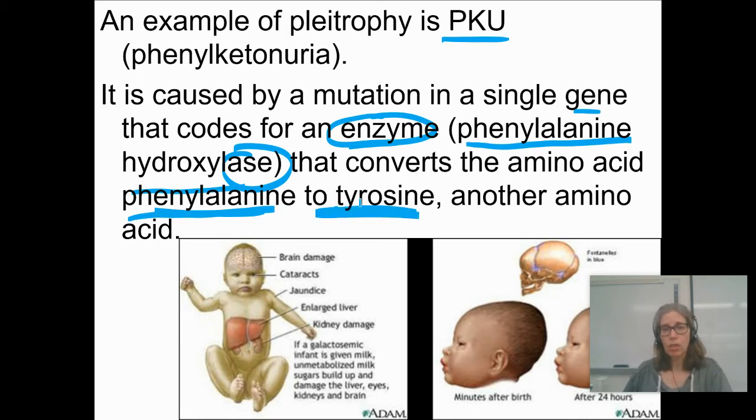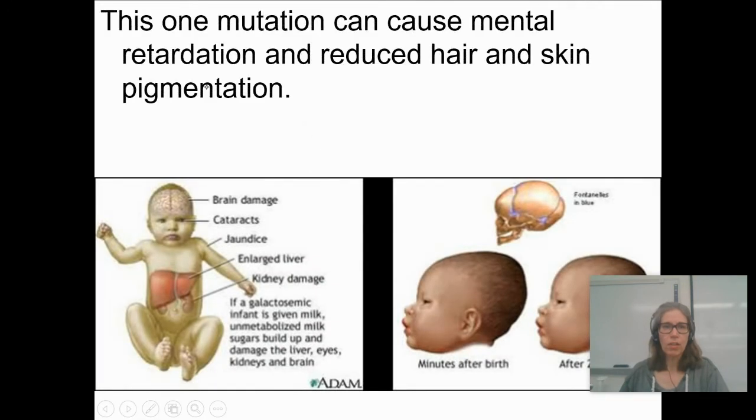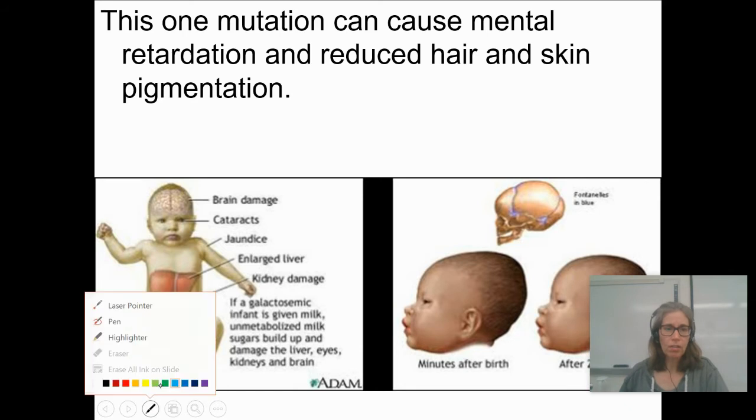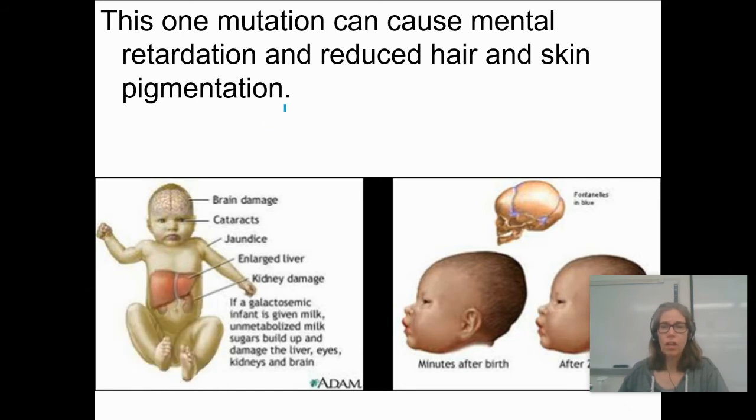That's the normal thing that it should do. If that enzyme isn't working or isn't working very well, you build up too much phenylalanine, which is a problem. Too much phenylalanine can cause mental retardation, reduced hair, and issues with skin pigmentation. You would think those are very different things, but it's this one gene, this one gene product that affects all of this different stuff.